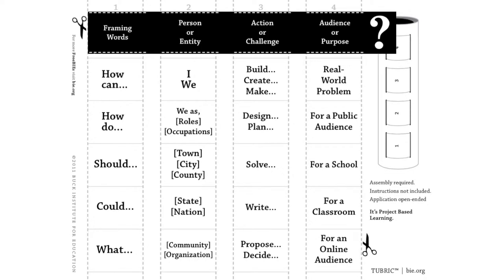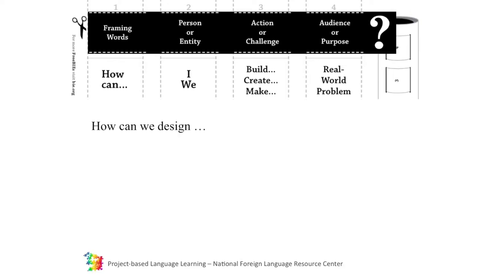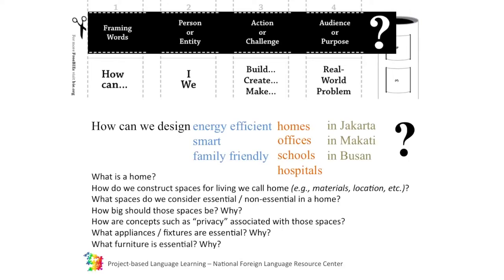One thing that you can do to frame the driving question is to use a tool that has been created by the Buck Institute for Education, called Tubric. This Tubric tool allows you to create driving questions such as 'how can we design homes?' Now, 'how can we design homes' is a little bit too vague, maybe too broad. So you can qualify nouns with, for example, 'energy efficient.' You can also narrow down the question by using a place or a city or some specific geographical location associated with the target culture.